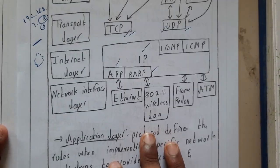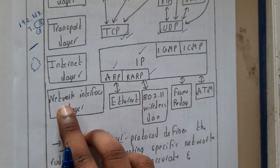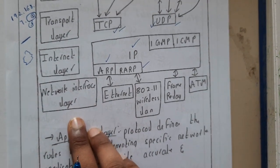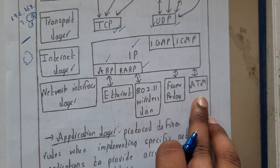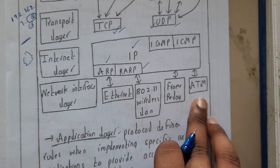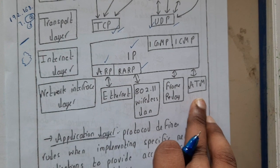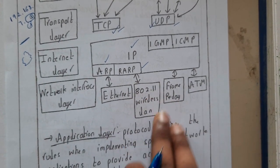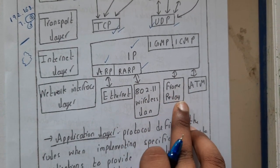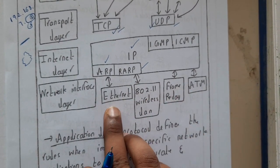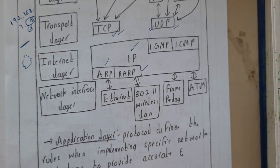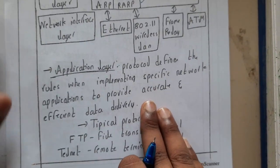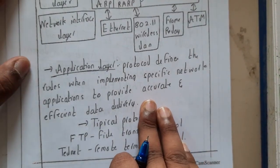The last layer is the Network Interface layer. Here we have ATM (Asynchronous Transmission Mode), 802.11 Wireless LAN, Frame Relay, and Ethernet. These are the modes used at the network interface layer.